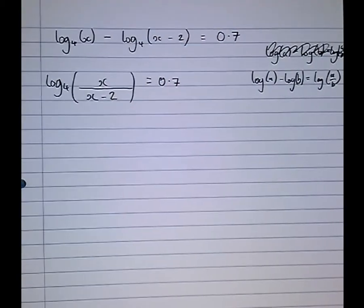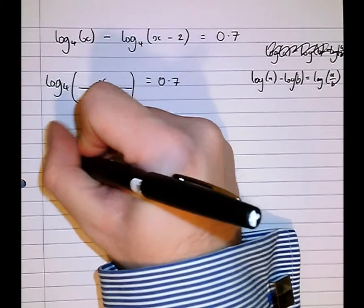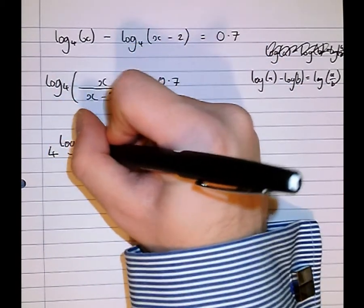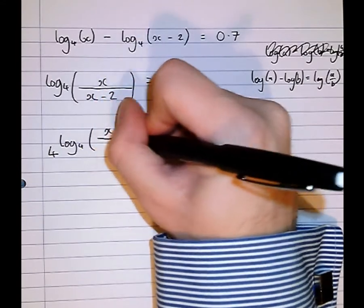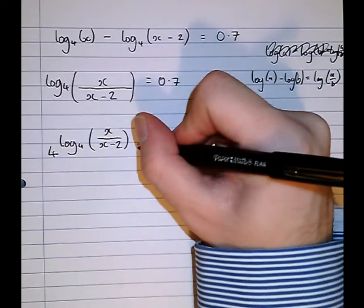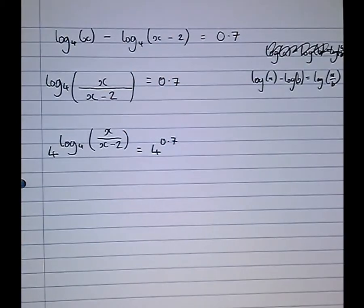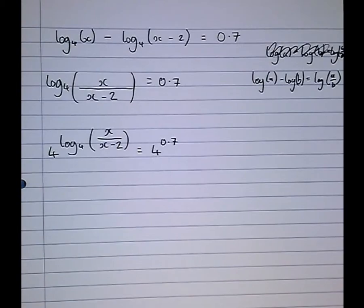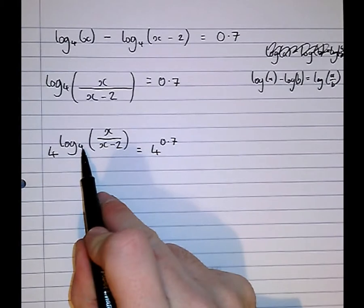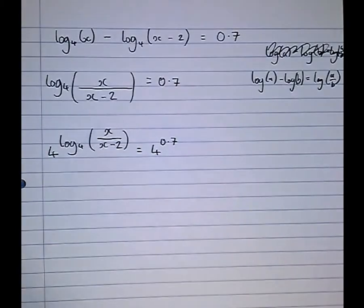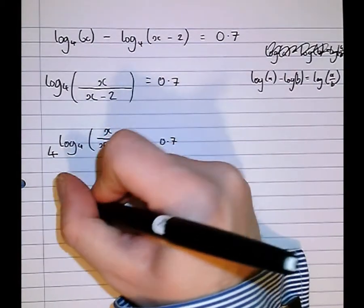Now at this stage we're in a good position now to solve. We can unlog, we can 4 to the power of both sides. Log to the base 4 of x over x minus 2 equals 4 to the power of 0.7. So here this asks what power do I have to give 4 to get x over x minus 2, then I give 4 that power to get x over x minus 2.